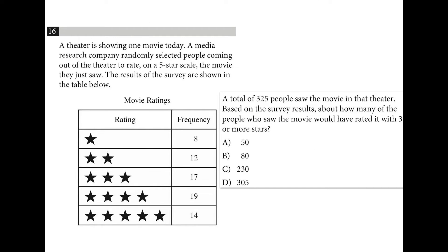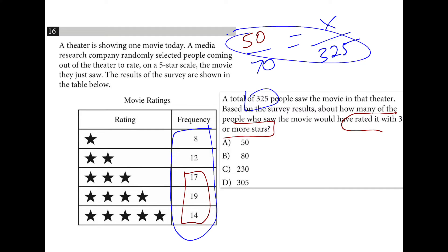So in this survey, if you count up how many total people were surveyed, that answer is 70. If you consider how many gave movies three or more stars, that answer is 50. Let's compare that to an unknown number of people out of 325. So you cross and multiply 50 times 325, and you divide by 70. You get about 232, or C.